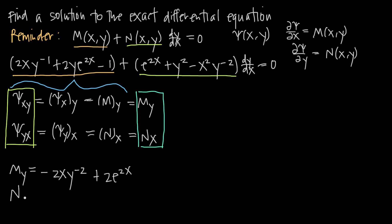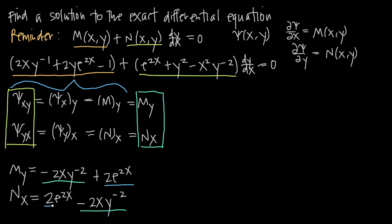Now let's look at the partial derivative of N with respect to x. Taking the derivative of that function with respect to x, we get 2e^(2x); the y-squared term becomes 0, and then we get negative 2xy to the negative 2. Comparing the two results, we have negative 2xy^(−2) and negative 2xy^(−2), and we have positive 2e^(2x) and positive 2e^(2x). So we conclude that ∂M/∂y equals ∂N/∂x, which proves the equation we've been given is in fact an exact differential equation.